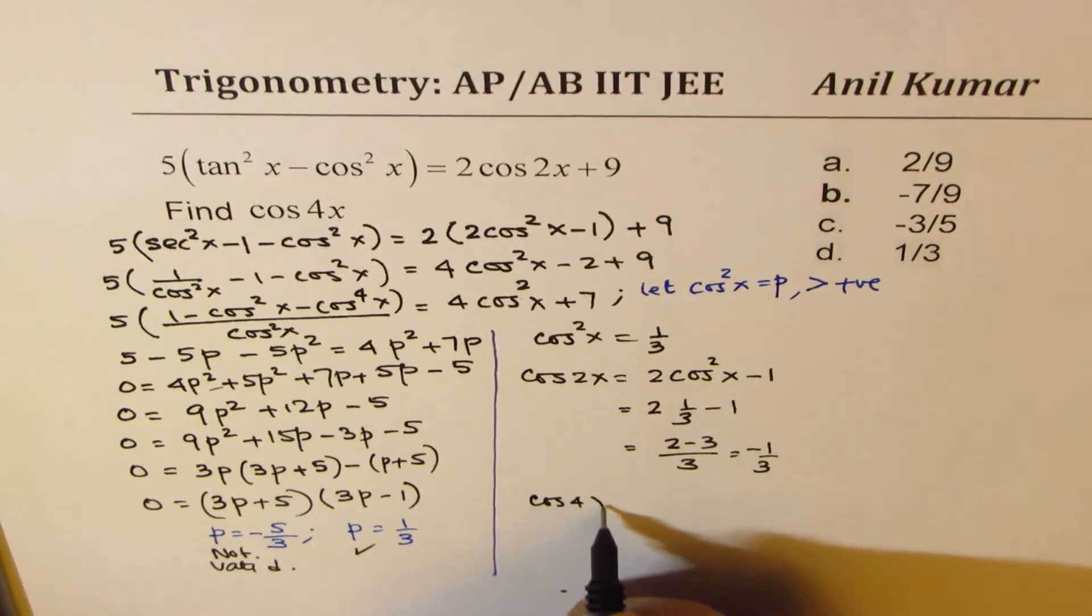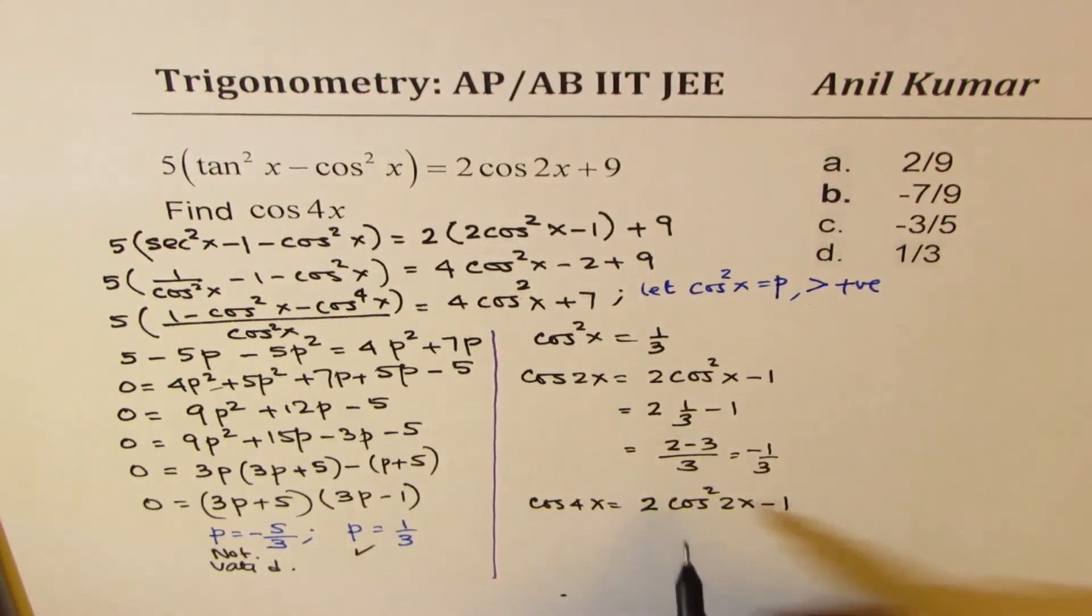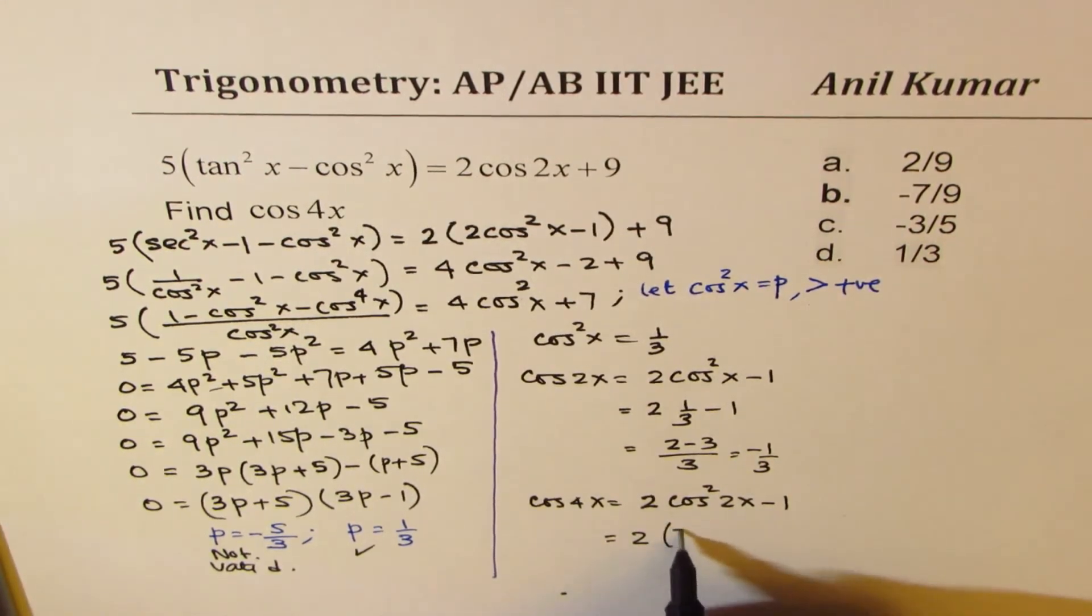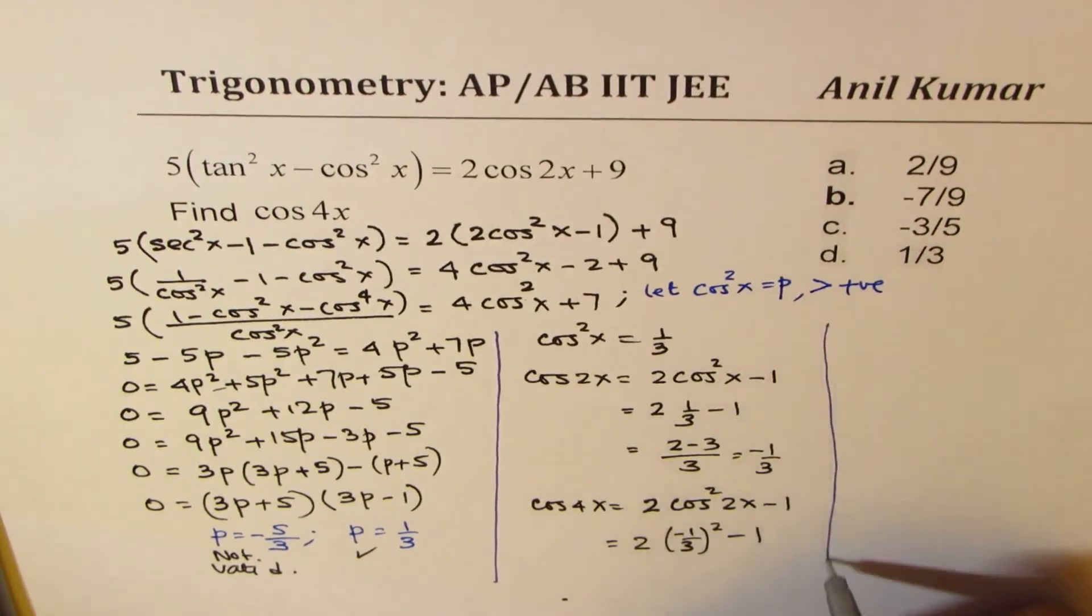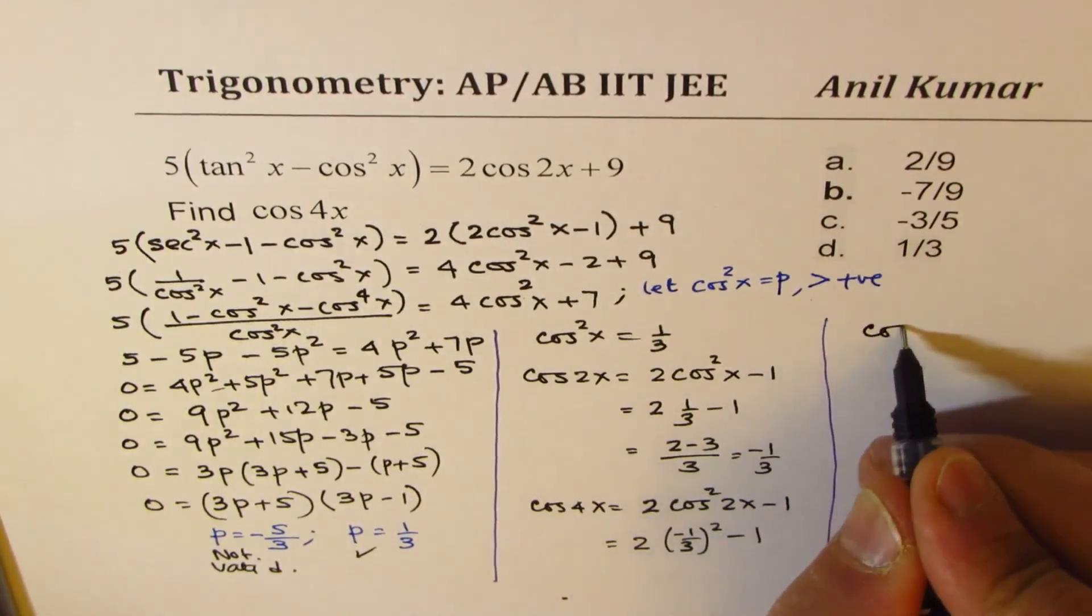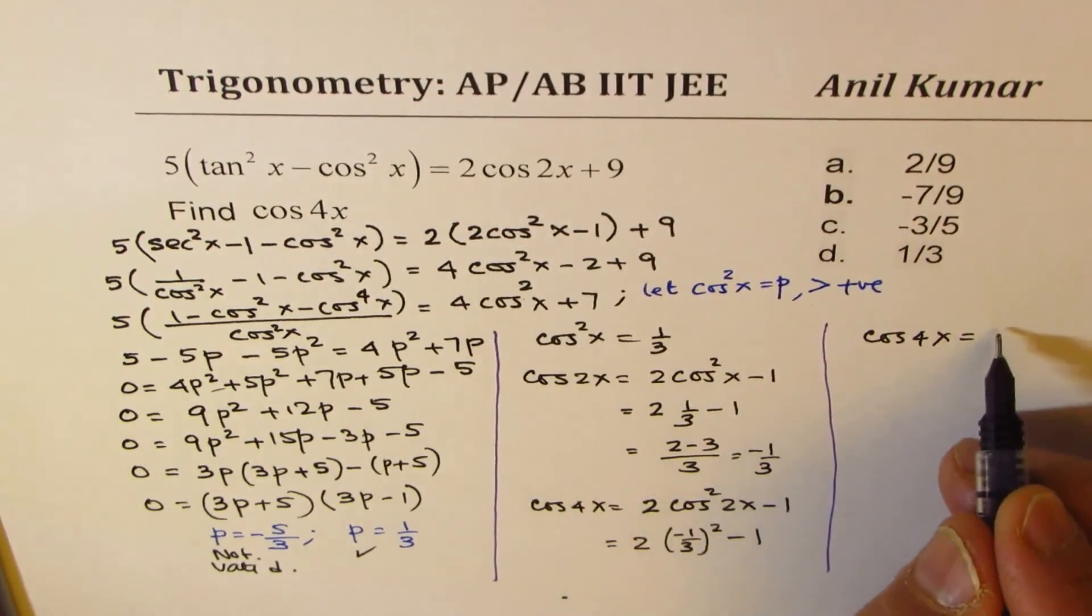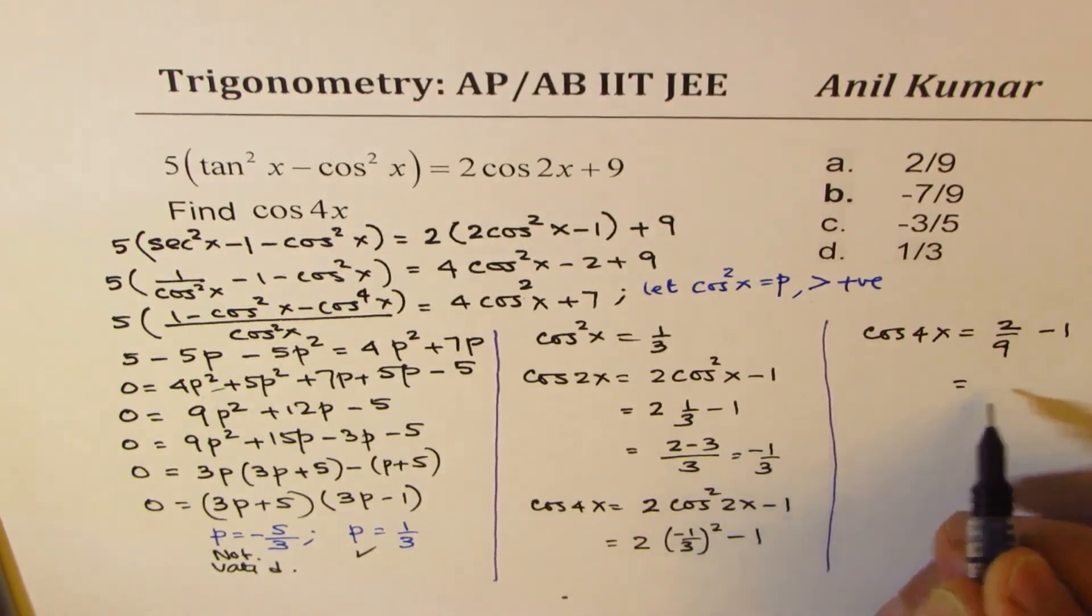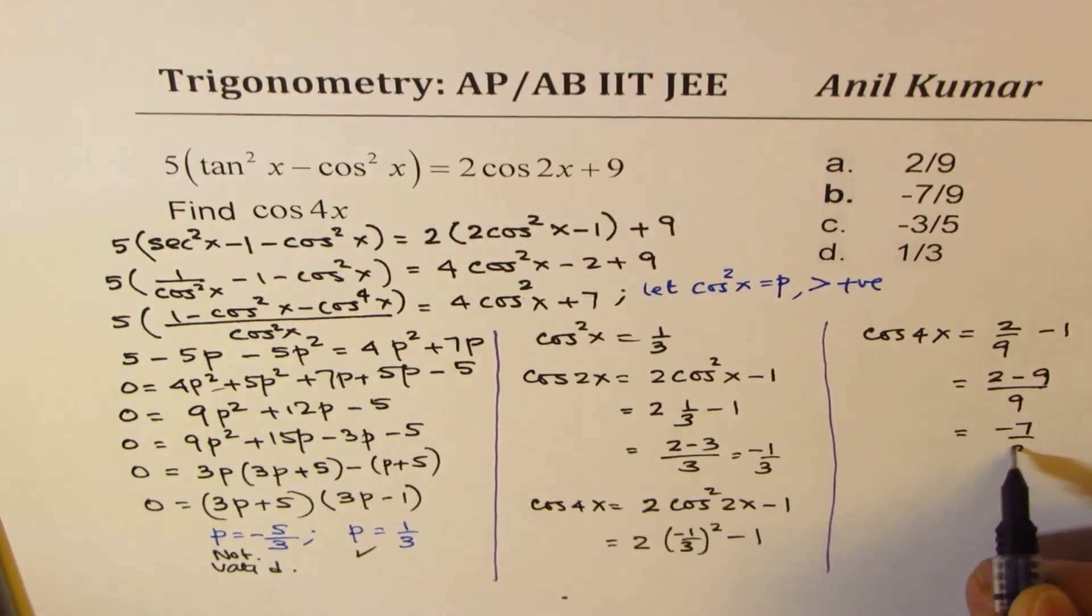We want to find the value of cos 4x. So cos 4x will be equals to 2 times cos square 2x minus 1. Now, we know what cos 2x is, which is minus 1 over 3. So we can write this as 2 times minus 1 over 3 whole square minus 1. So we get cos 4x equals to 2 over 9 minus 1, which is 2 minus 9 over 9, or minus 7 over 9.